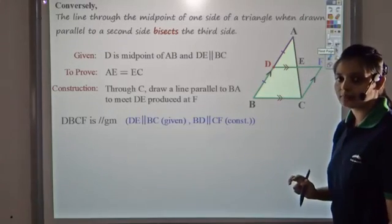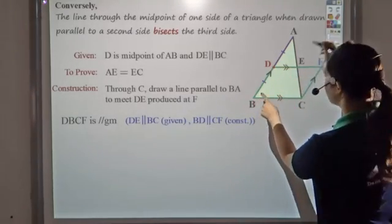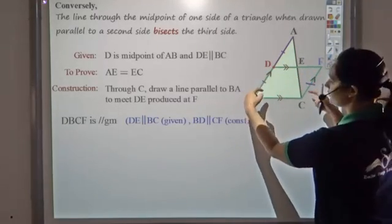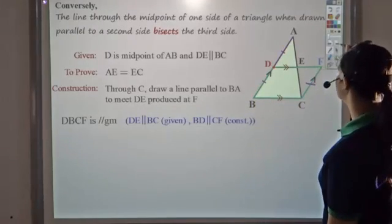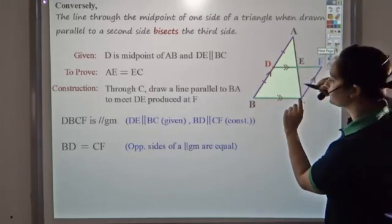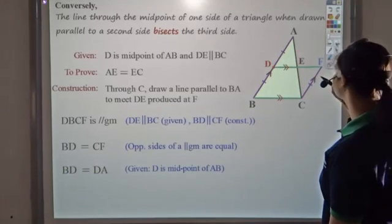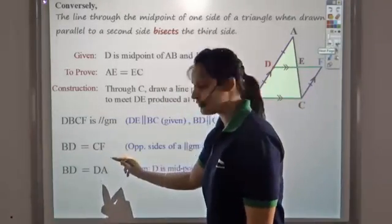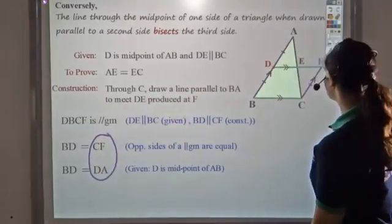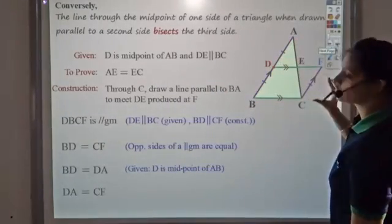Once it is a parallelogram, the opposite sides are equal. So DB should be equal to CF. Since this is a parallelogram, DB and CF are parallel and also equal in length, so DB equals CF. Now I know that BD is also equal to DA since D was the midpoint. Since BD equals CF and BD equals DA, then CF and DA should also be the same — so DA is equal to CF.